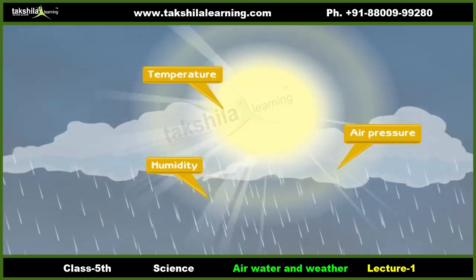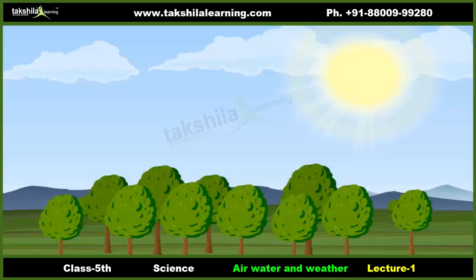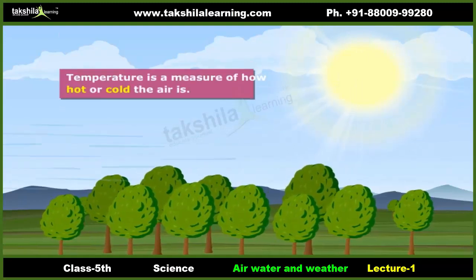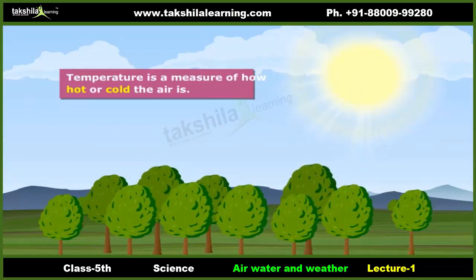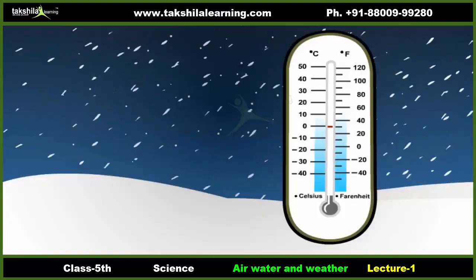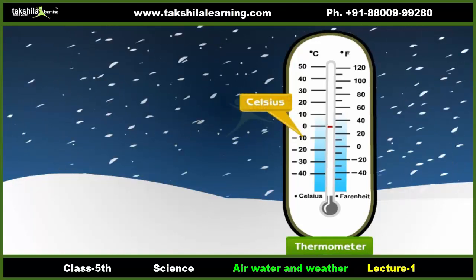Let us learn about these factors. Temperature is a measure of how hot or cold the air is. It depends upon the energy received from the sun. Temperature is measured with a device called a thermometer and it is calculated in degrees Celsius and degrees Fahrenheit.